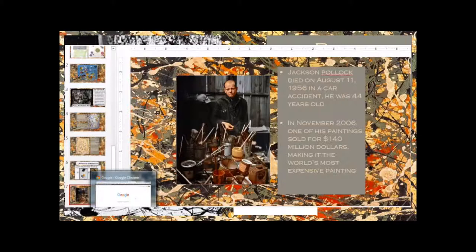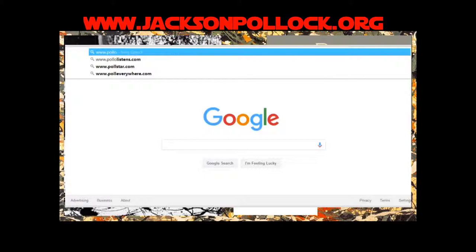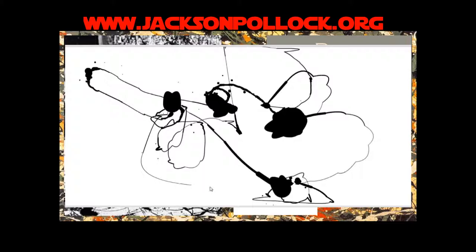So to do your abstract splatter painting on the computer, we are going to go to www.jacksonpollock.org. So once you click on jacksonpollock.org, we are just going to use the mouse. And every time you move the mouse, it will create a splatter painting on your canvas.